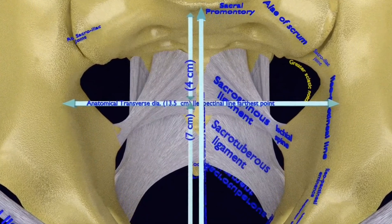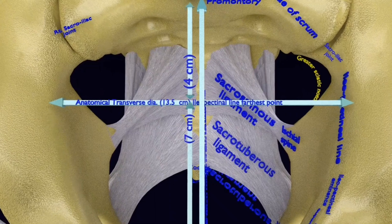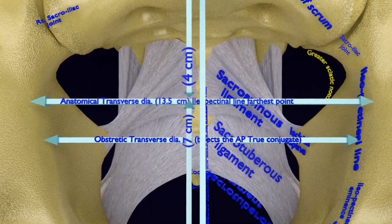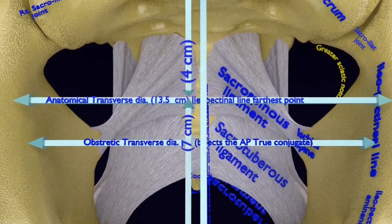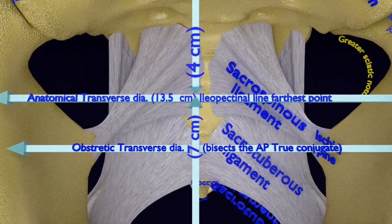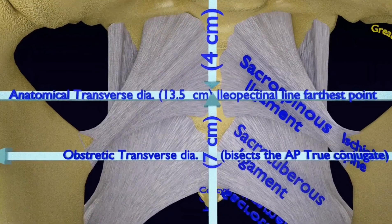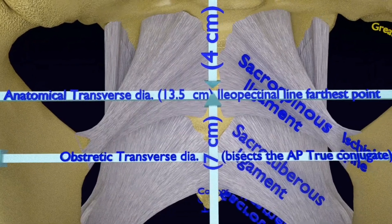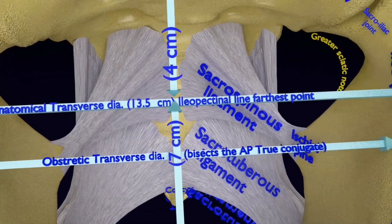The transverse diameters of importance at the pelvic inlet are: the anatomical transverse diameter, which is 13.5 cm between the farthest two points on the iliopectineal lines. It lies 4 cm anterior to the promontory and 7 cm behind the symphysis, making it the largest diameter in the pelvis. The obstetric transverse diameter bisects the true conjugate and is slightly shorter. Normally, the fetal head enters the pelvic excavation through a rotation from the oblique diameter to the transverse diameter.